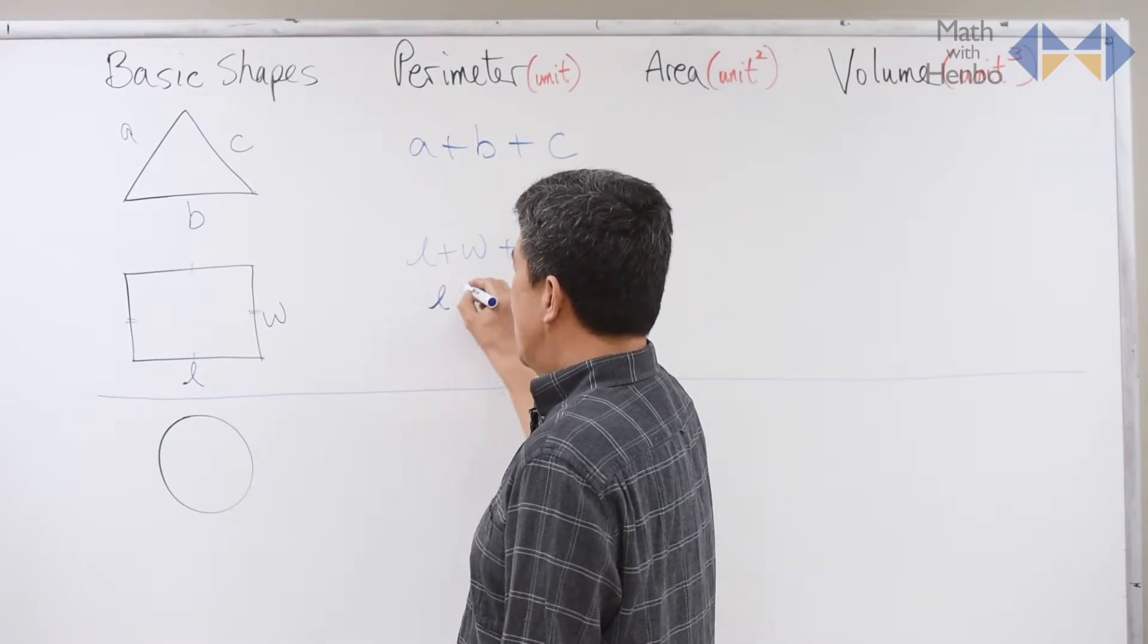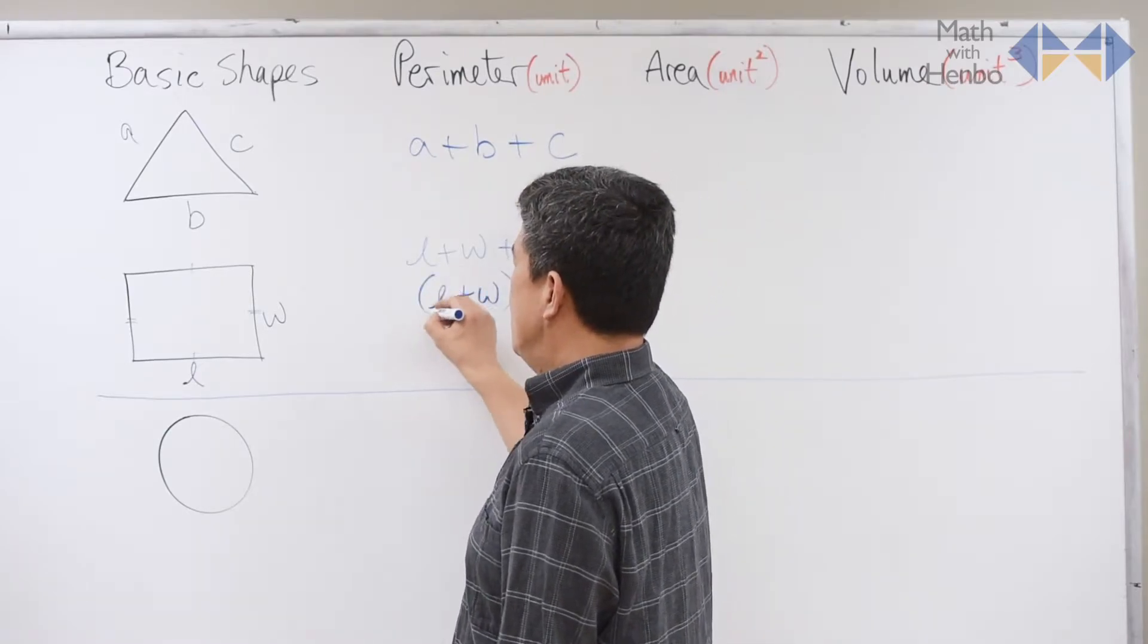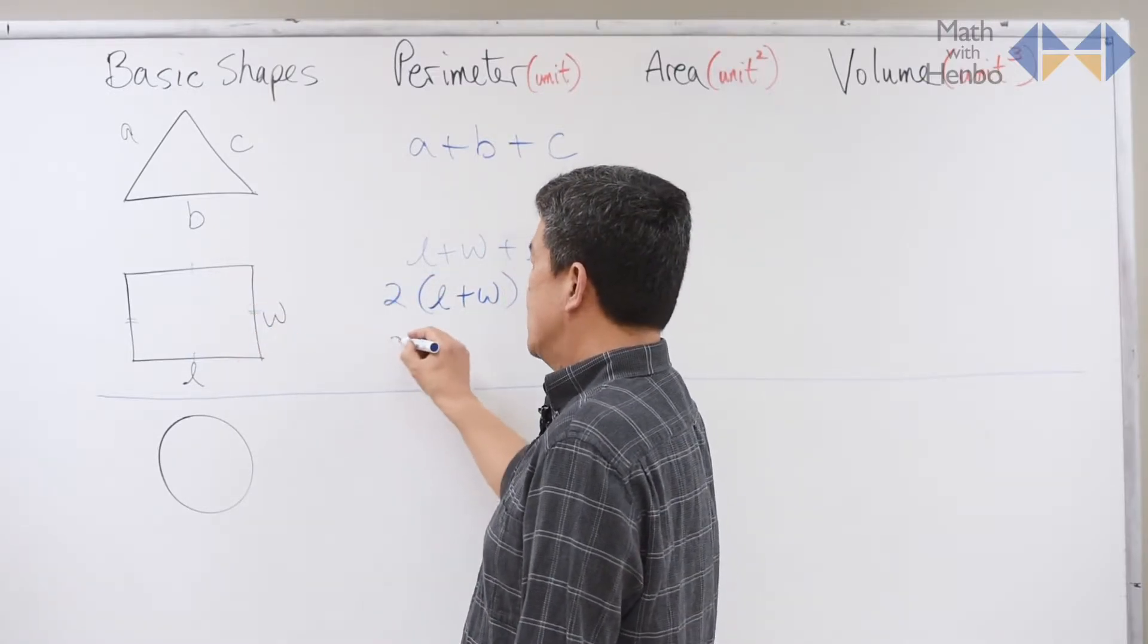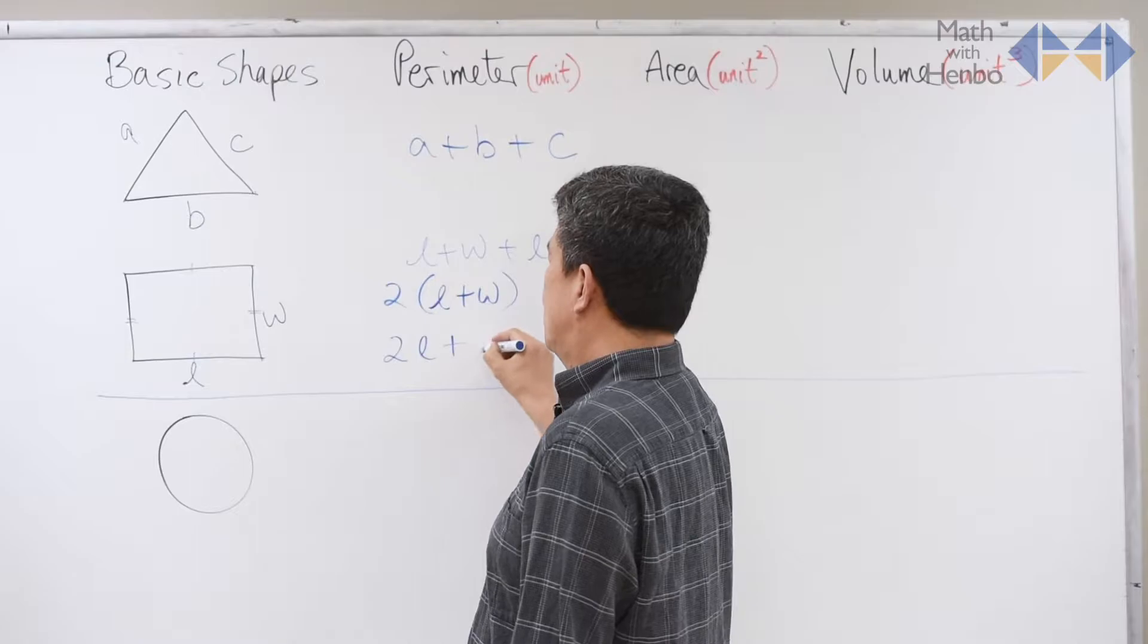Knowing that, you could do length plus width, and then you could do times two at the end. Or you could do two lengths plus two widths.